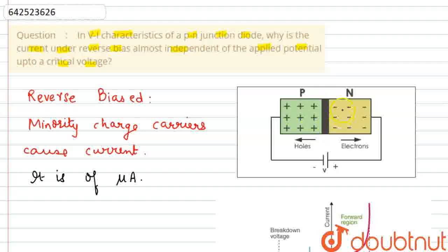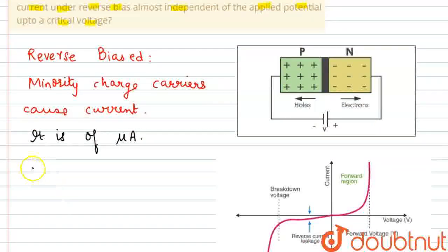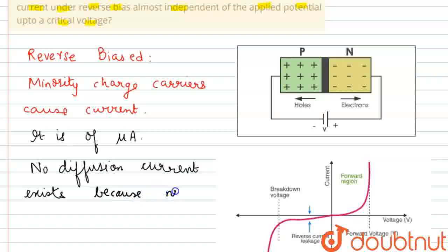The current that exists is only because of the electric field that is created due to the depletion layer. We can say no diffusion current exists because no majority charge carriers...